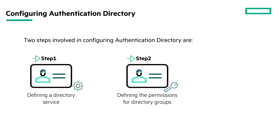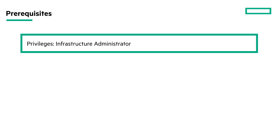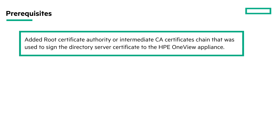Use the user and group screen to define the permissions for directory groups. Before you begin, you must have infrastructure administrator privileges on this appliance. Ensure that you have added the root certificate authority or intermediate CA certificate chain that was used to sign the directory service certificate to the HPE OneView appliance.